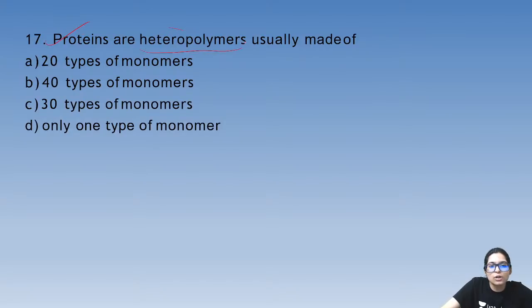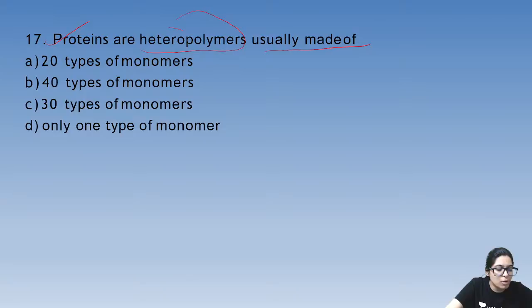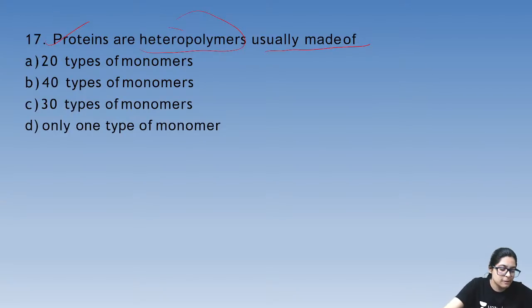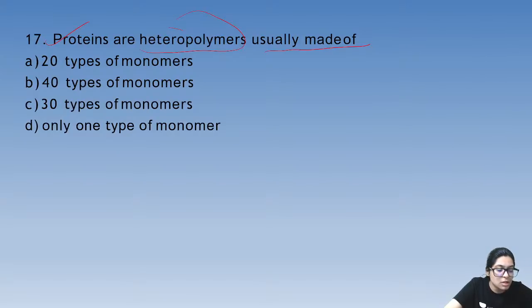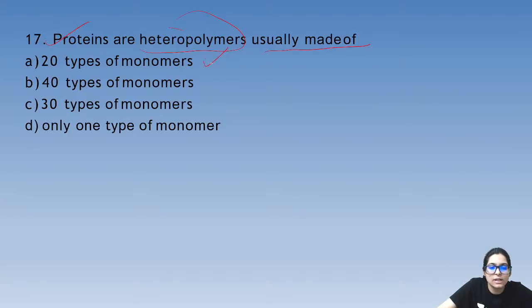Proteins are heteropolymers — what are they usually made up of? They are made up of 20 types of monomers.